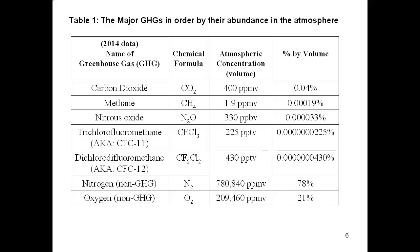Table 1: the first three gases are considered to be the major greenhouse gases. In 2014, their atmospheric concentrations were: CO2 at 400 parts per million by volume, methane at 1.9 parts per million, and nitrous oxide at 330 parts per billion. At the bottom, I have included data about two non-greenhouse gases, nitrogen and oxygen. Most people know these are the two most abundant atmospheric gases, so you can use them for comparison. You can pause the video to familiarize yourself with the other information in Table 1.